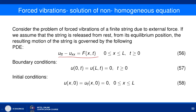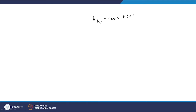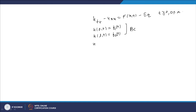We can consider a more general problem where both boundary conditions and initial conditions are non-homogeneous: u_tt - u_xx = f(x,t), with boundary conditions u(0,t) = f1(t) and u(L,t) = f2(t), defined for t ≥ 0 and x ∈ [0, L]. The initial conditions are u(x,0) = f(x) and u_t(x,0) = g(x), so both boundary and initial conditions may be non-homogeneous.